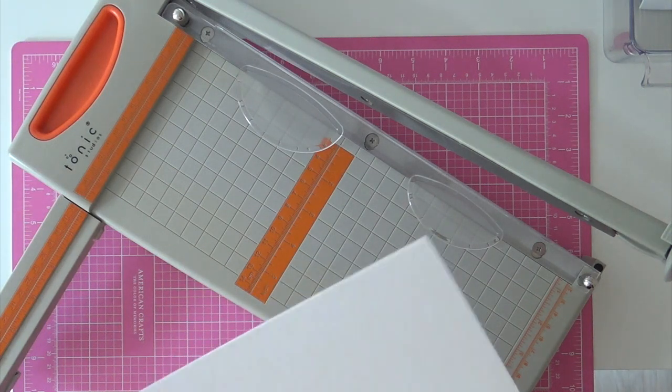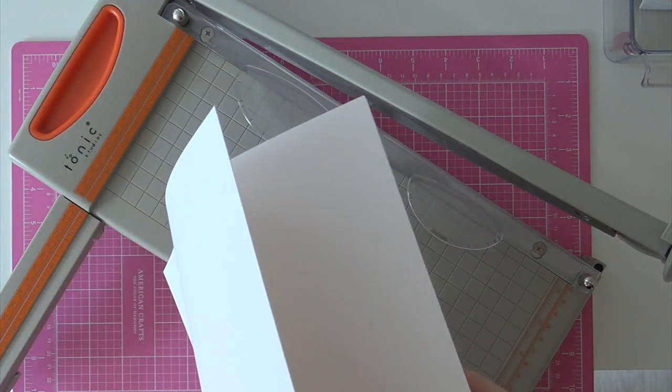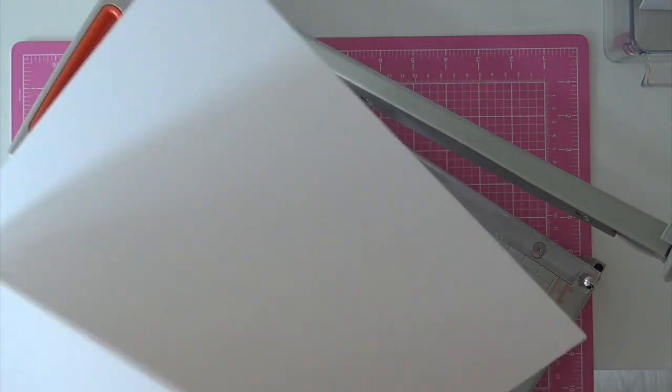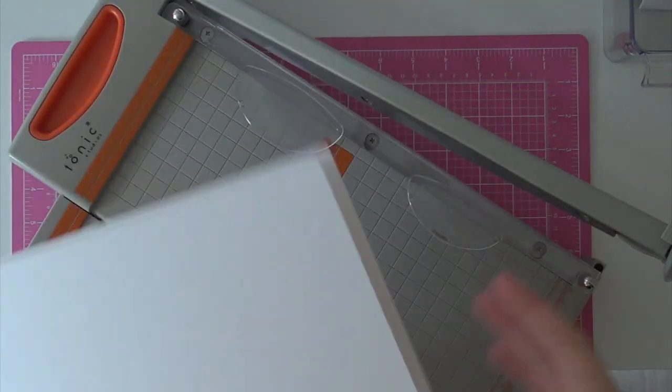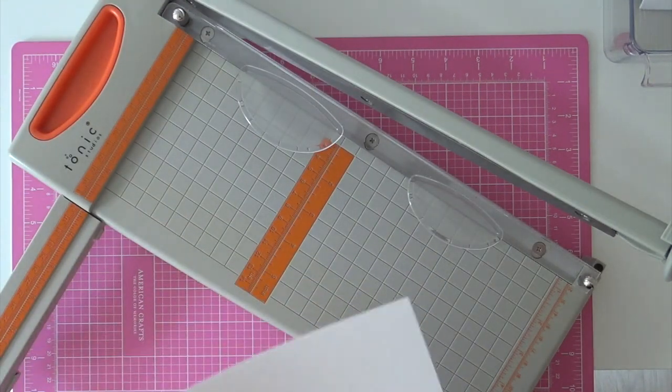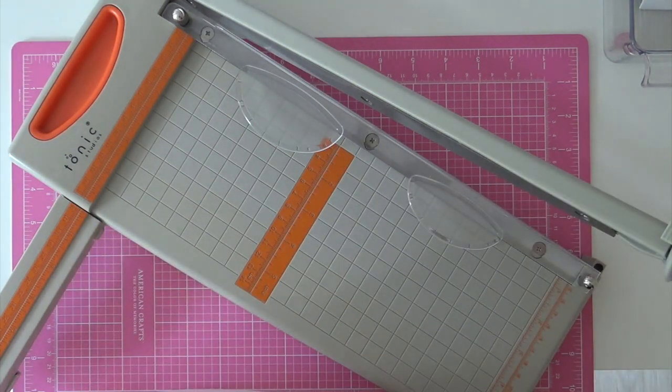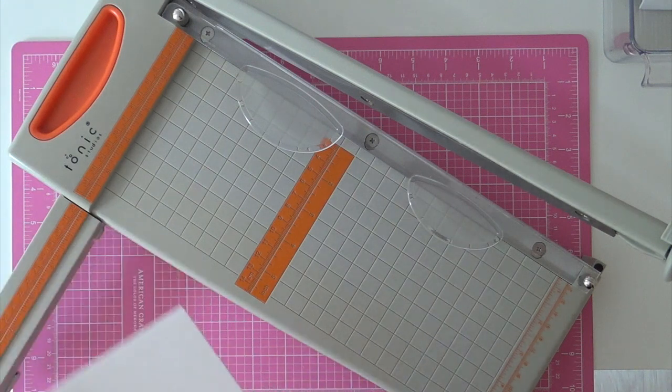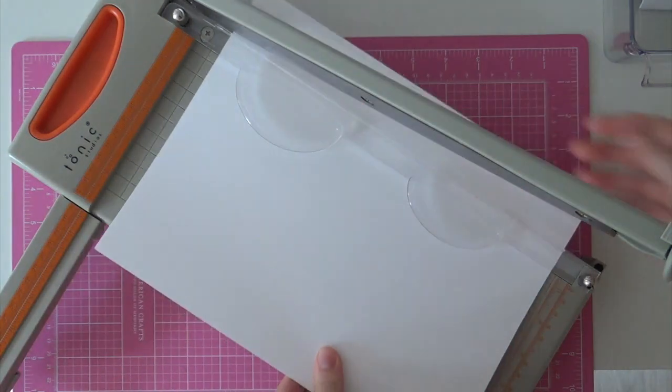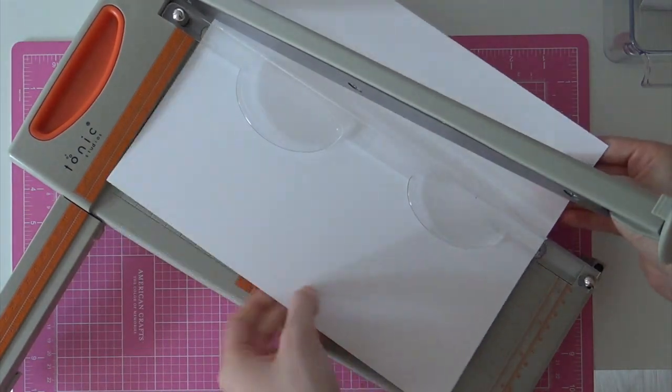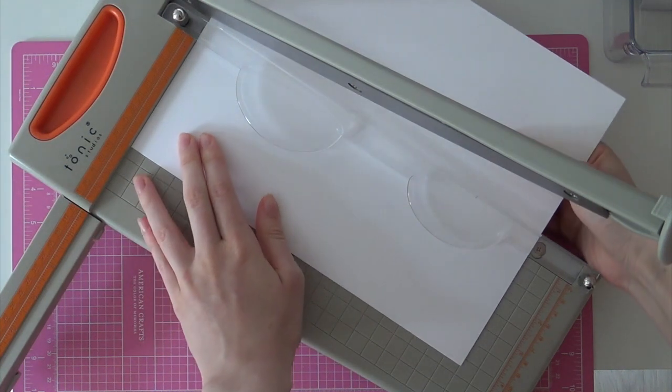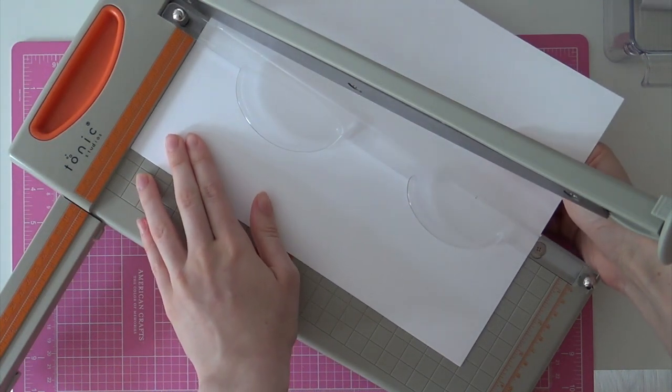And I'm going to test out one more thing. So I have three sheets of Neenah 110 pound cardstock over here. I'm going to try to cut some standard size cards out of this. I'm going to be cutting portrait cards. So I'm going to slide that under, lining it up with the four and a quarter marking.